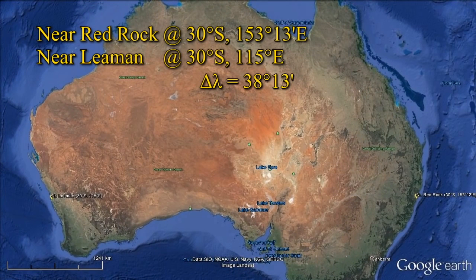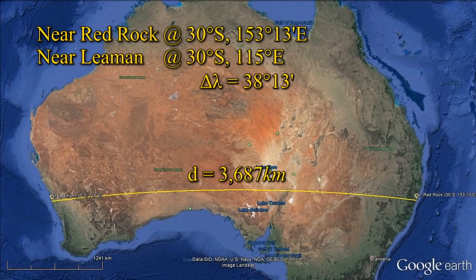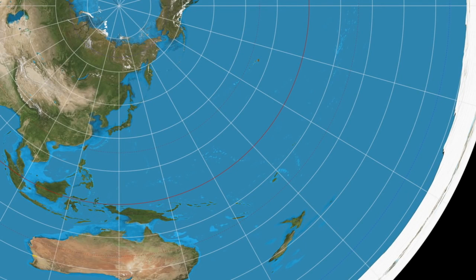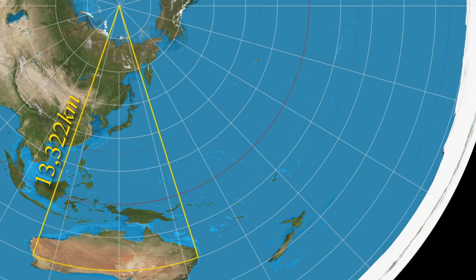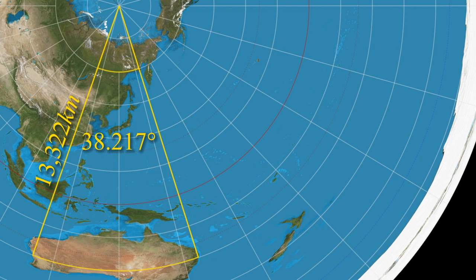If we were to set off from our point near Red Rock and drive west until we got to our point near Lehmann, we would cover a distance over land of 3,687 kilometres. So what happens if we travel along the same 30 degrees south latitude line, for 38 degrees and 13 minutes, on the polar grid of the Flat Earth? The 30 degrees south line is 13,322 kilometres from the geographic North Pole, and must be on the Flat Earth too. We know the longitudinal and hence angular separation between our two points at this latitude: 38 degrees and 13 minutes, or 38.217 degrees.